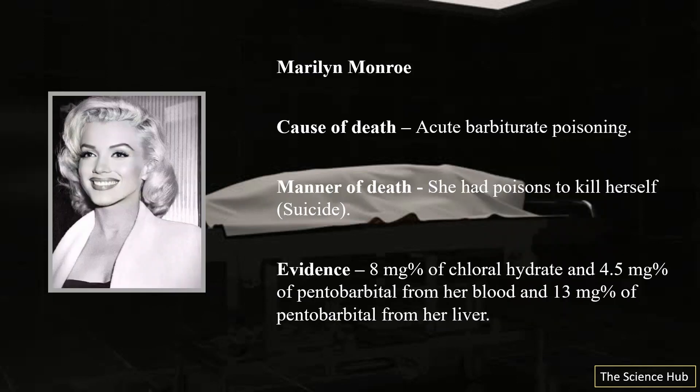The case of Marilyn Monroe: the cause of death was acute barbiturate poisoning. The manner of death was suicide — she had taken poison to kill herself. Evidence found included 8 milligrams of chloral hydrate and 4.5 milligrams of pentobarbital from her blood, and 13 milligrams of pentobarbital from her liver.